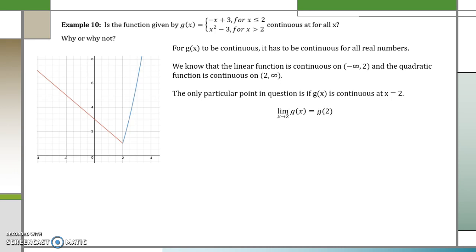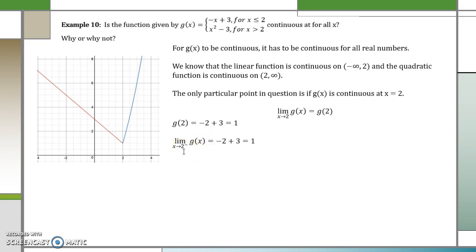So we want to know if the limit as x approaches 2 of g of x equals g of 2. We can easily find g of 2. Since x equals 2, we use the top function because it falls under x is less than or equal to 2. So negative 2 plus 3 is 1. Now let's find the limit as x approaches 2. As x approaches 2 from the left, we use the negative x plus 3 equation because we're looking at numbers slightly less than 2. Plugging in 2, we get negative 2 plus 3, which is 1.